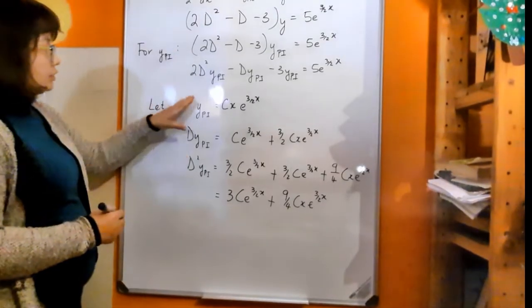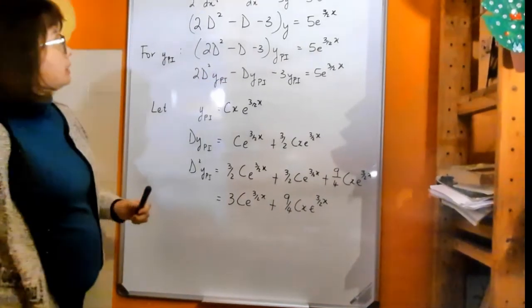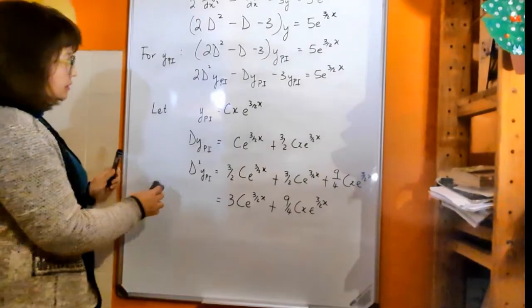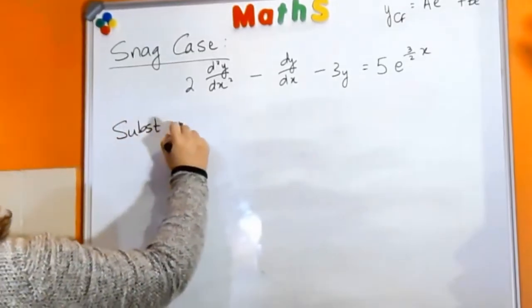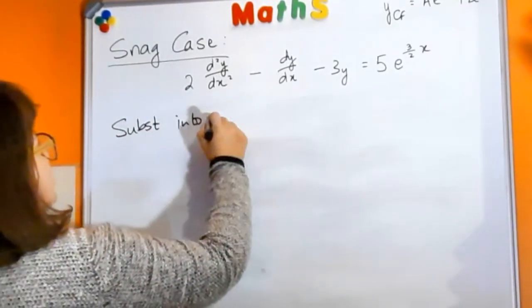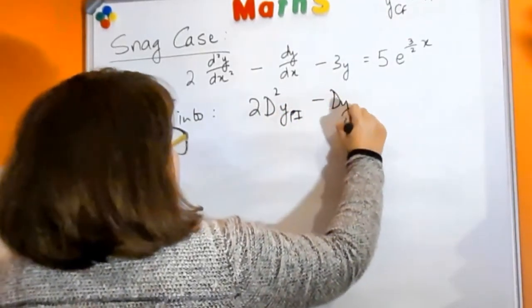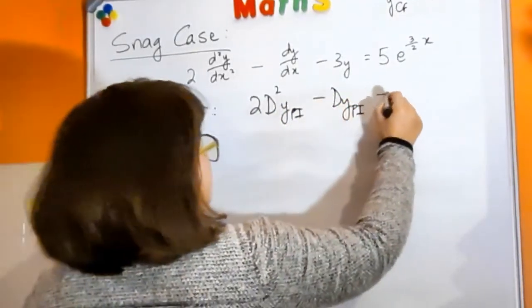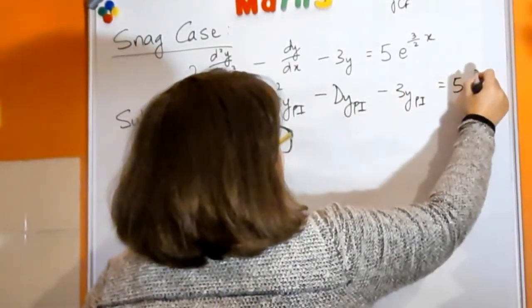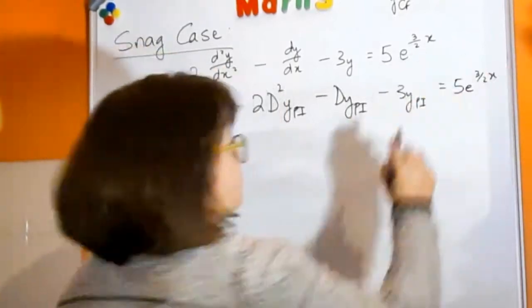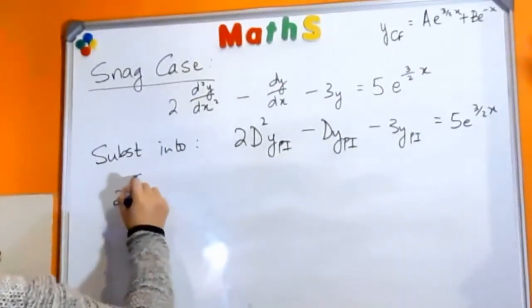Okay, and now we're going to take these values and substitute into this equation. So we just need a bit more space here. So I'm going to substitute into the equation for d squared ypi and d ypi. All right, and we get 2 times the second derivative.